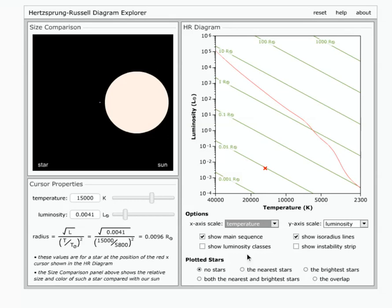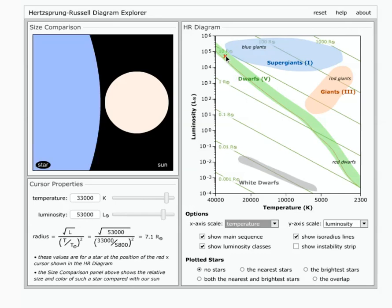And then I can also turn on the luminosity classes. So this is showing here different types of stars again and where they're typically found on the HR diagram. And you're asked a question about the main sequence and what types of stars we see at the top of the main sequence. So you can see these are the types of stars.